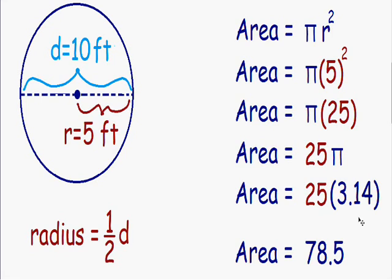And we can't forget to include our units. Area is always given in square units, such as square feet, or square yards, or square meters. Since this particular problem, the diameter was given to us in feet, then our units need to be square feet.